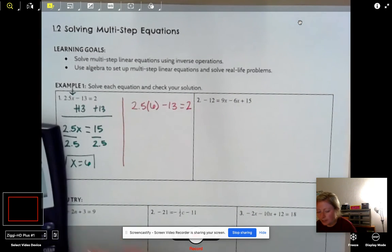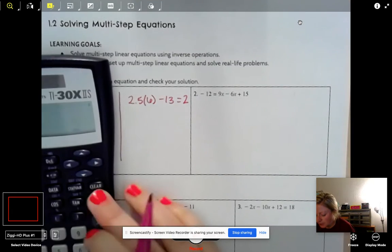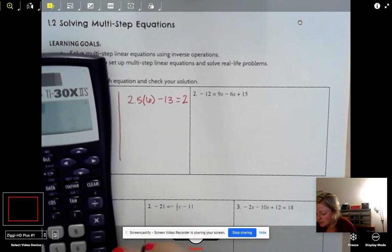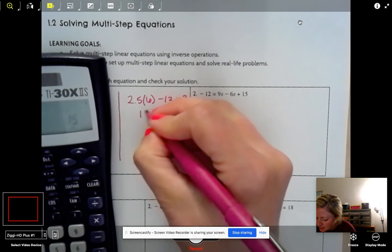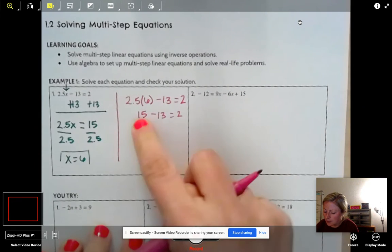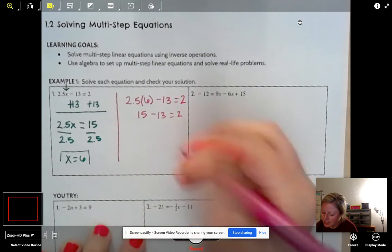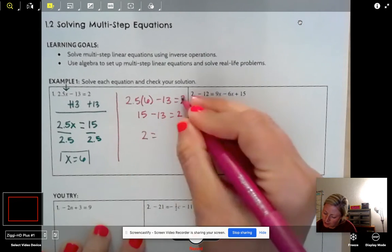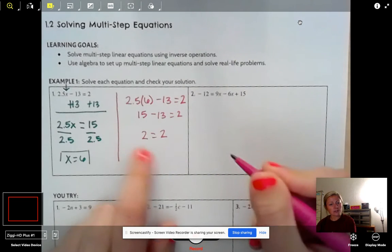So here, if we take our little calculator, if we hit 2.5 times 6, I get 15. Not changing my 13. I'm dropping down my 2. We know that 15 minus 13 is actually 2. Drop down my equals 2. Does 2 equal 2?